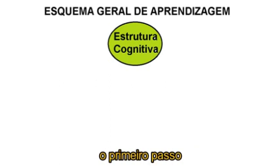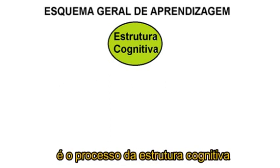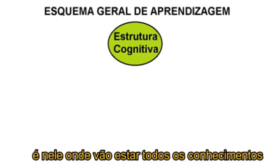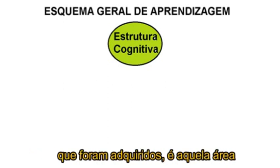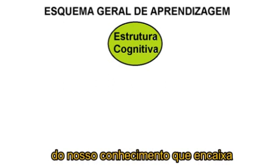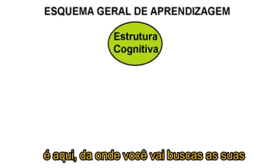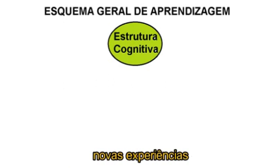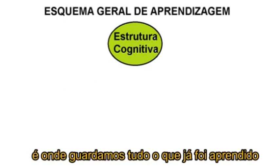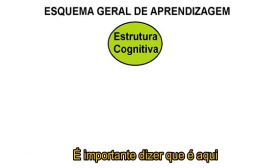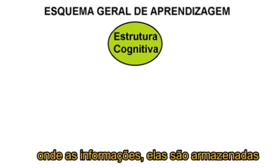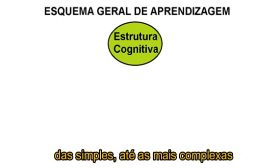Vamos agora a um esquema geral da aprendizagem. De acordo com Ausubel, o primeiro passo — a primeira etapa da teoria geral da aprendizagem — é o processo da estrutura cognitiva. É nela onde vão estar todos os conhecimentos já adquiridos; é aquela área do nosso conhecimento que encaixa todos os processos de ancoragem. É aqui de onde você vai buscar suas experiências anteriores para desenvolver novas experiências — é onde guardamos tudo o que foi aprendido. As informações são armazenadas das simples até as mais complexas.